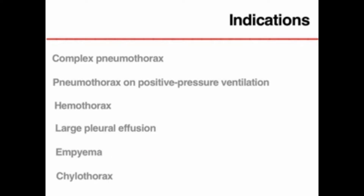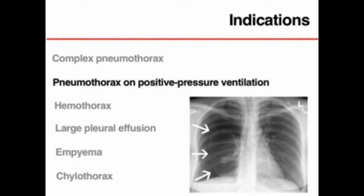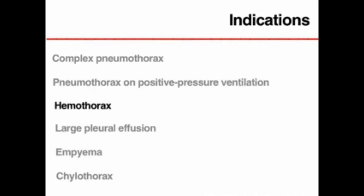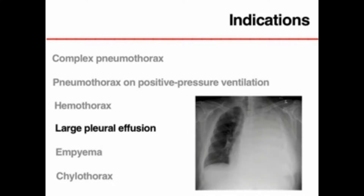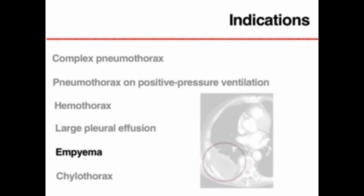The most common indications for chest tube drainage are pneumothorax that is recurrent, persistent, under tension, or bilateral; any pneumothorax in a patient on positive pressure ventilation; hemothorax; recurrent or symptomatic large pleural effusion; empyema; and chylothorax.